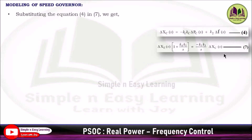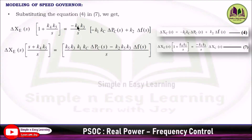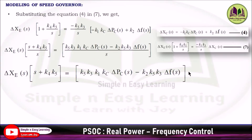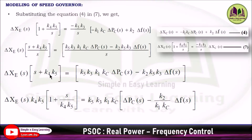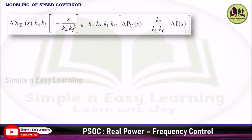Now substitute Equation 4 into Equation 7, where Equation 4 contains del_Xc. After substituting, multiply terms inside the bracket, take LCM, and cancel s from both sides. On the left side, take K4·K5 as common to get (1 + s/(K4·K5)); on the right side, take K5·K3·K1·Kc as common. The K5 and K3 terms cancel, giving the simplified equation from the previous slide.